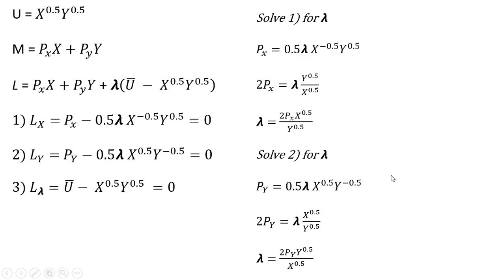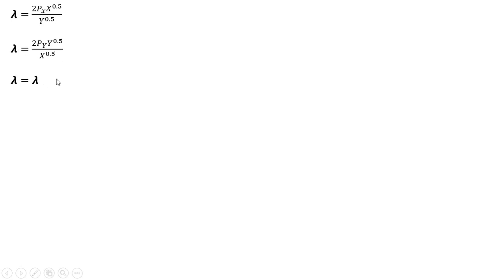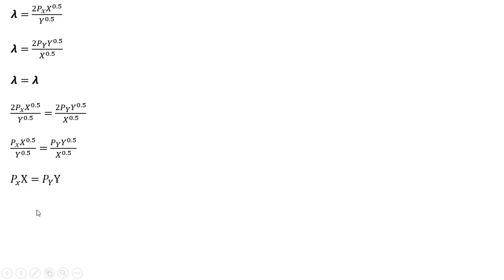I'm going to take these two lambda expressions and set them equal to one another — setting lambda equal to lambda and simplifying. The first thing I did was divide everything through by 2, so the twos cancel, and then cross-multiplying the x and y terms, we get this result. Solving for x gives us price of good y divided by price of good x, and solving for y gives us price of good x divided by price of good y.